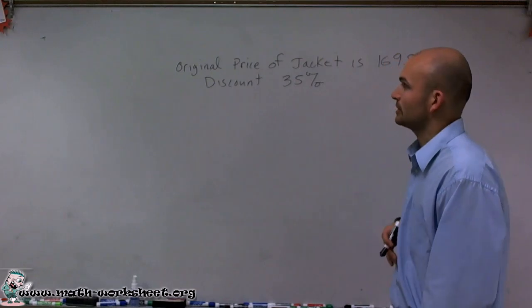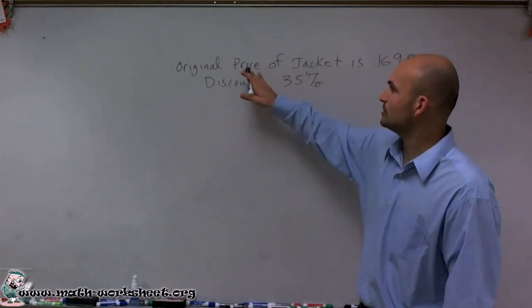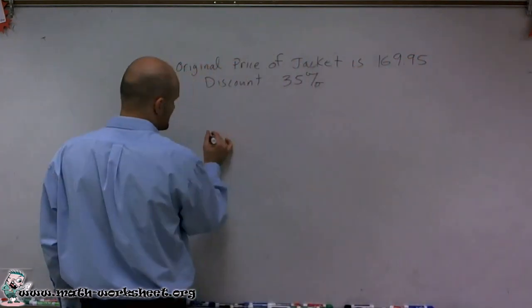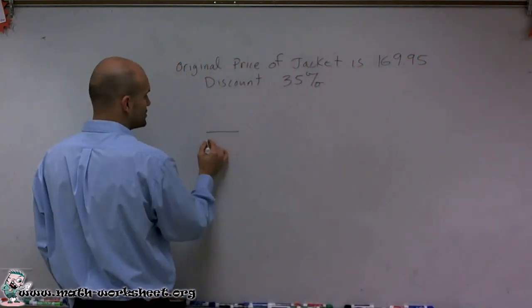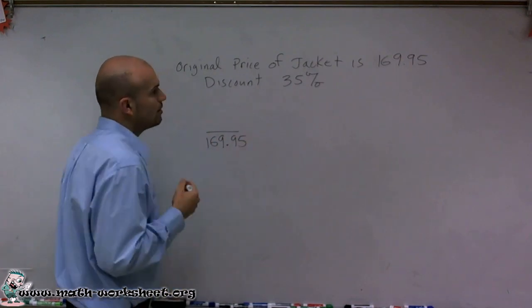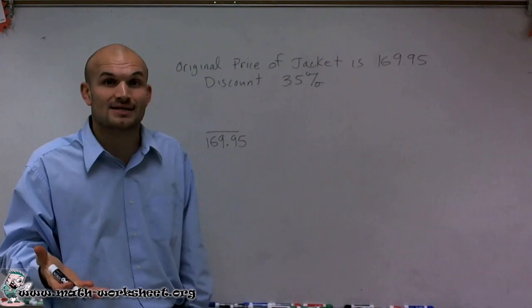The first ratio that I'm going to create is what is the original price of the jacket and the new price of the jacket. So we're going to set up a ratio. Our original price of our jacket is $169.95. Now what we want to find is the discounted price.